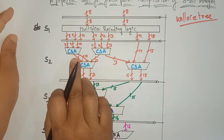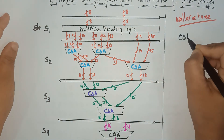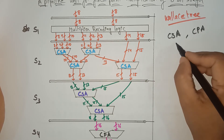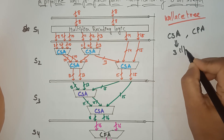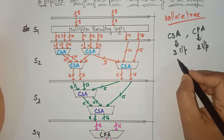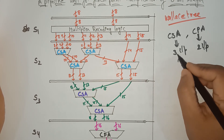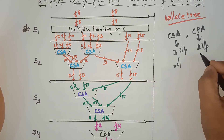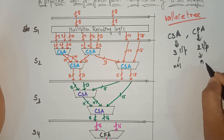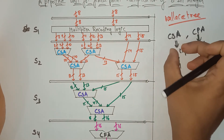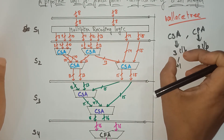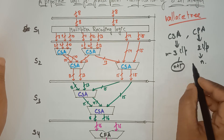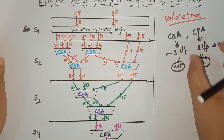The carry save adder takes 3 inputs and the carry propagation adder takes 2 inputs. In the carry save adder, if the inputs are N bits, the output will be N+1 bits. In the carry propagation adder, if the inputs are N bits, the output is only N bits. So: carry save adder with 3 inputs gives N+1 bit output; carry propagation adder gives N bit output.